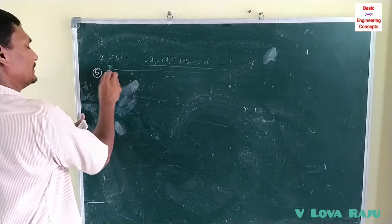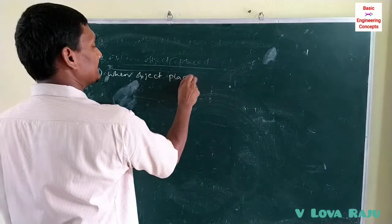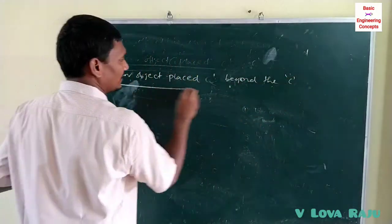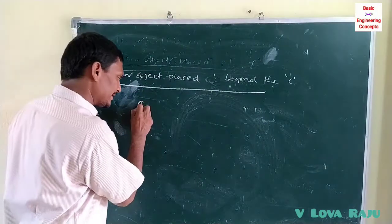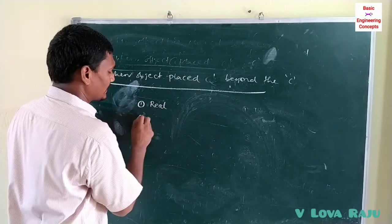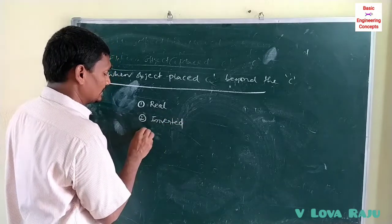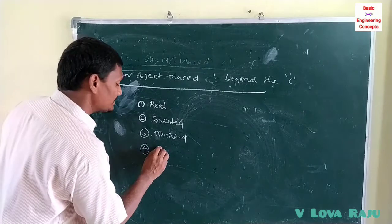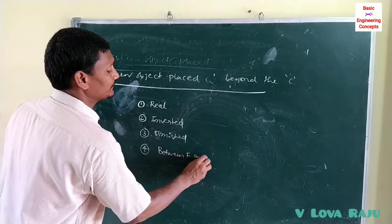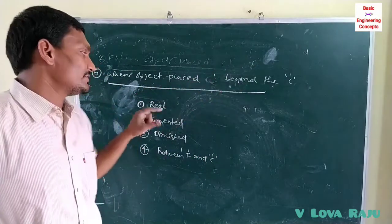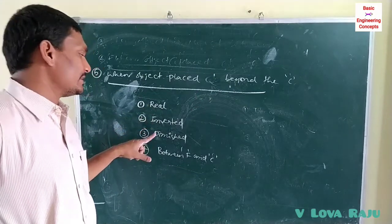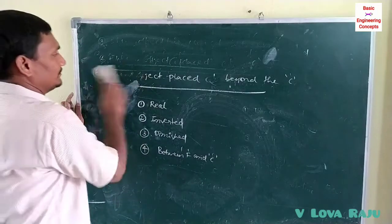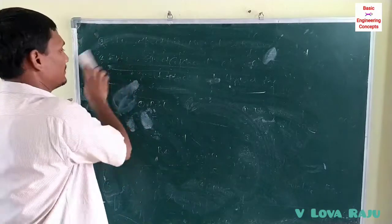Condition five: the object is placed beyond the center of curvature. The image is a real image, an inverted image, and a diminished image — the magnified size decreases. The image is formed between the focus and the center of curvature. So when the object is beyond C, the image is real, inverted, diminished, and formed between F and C.